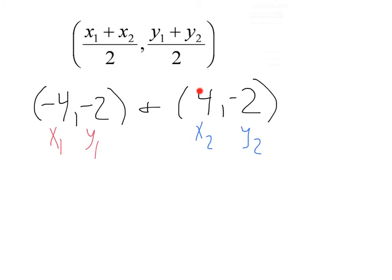First, we have to add up our x's. That's going to be, inside this point, that's going to be negative 4 plus 4, divided by 2. And my next point here is going to be my added y-values, negative 2 plus negative 2, all divided by 2.